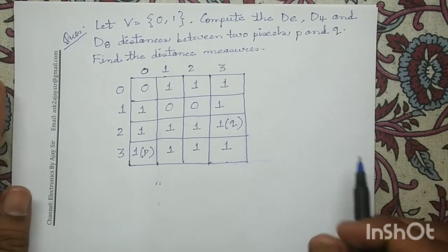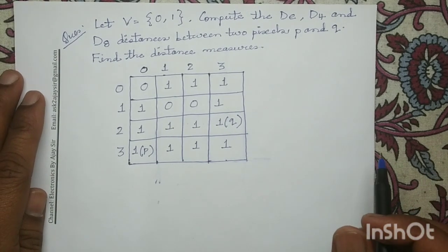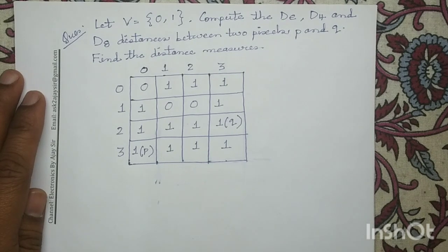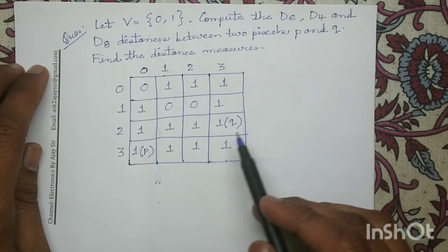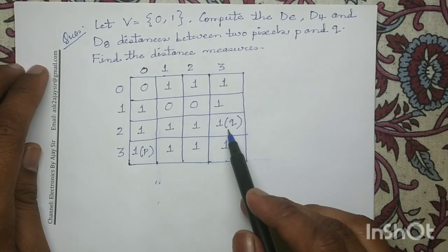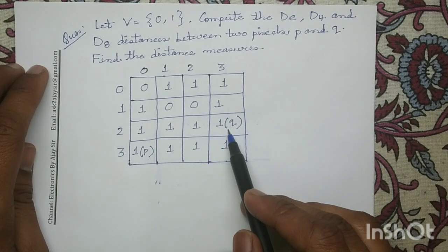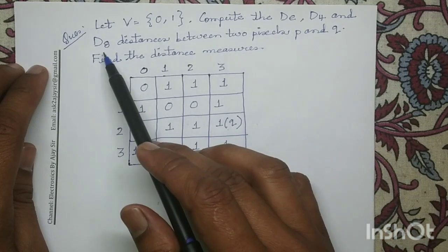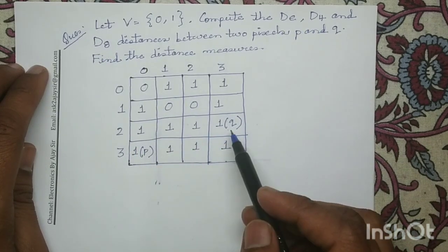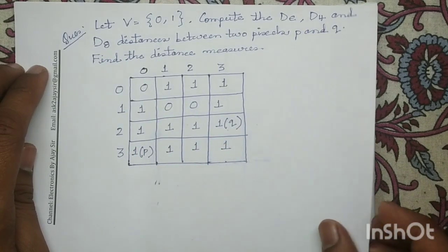Good morning all. Today we will solve a numerical question on distance measurement. In this question, an input digital image is given to us. The pixel P and pixel Q are mentioned here, and we have to compute the DE distance, the D4 distance, and D8 distance between pixel P and Q. So let us solve this question.